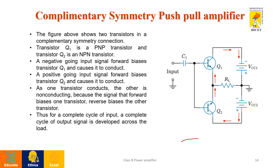This is the circuit diagram of the complementary symmetry push-pull amplifier, where two different transistors are used — one is an NPN transistor and another is a PNP transistor. One transistor conducts in one half cycle and the other transistor conducts in the other half cycle. For a positive-going input signal, the NPN transistor is forward biased.